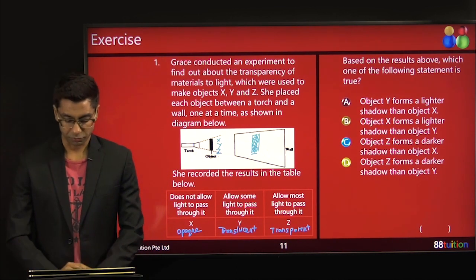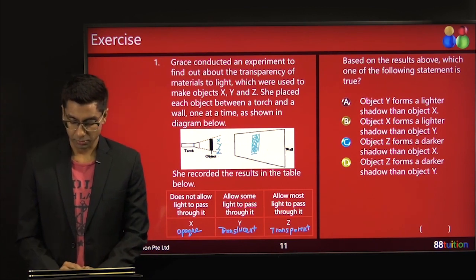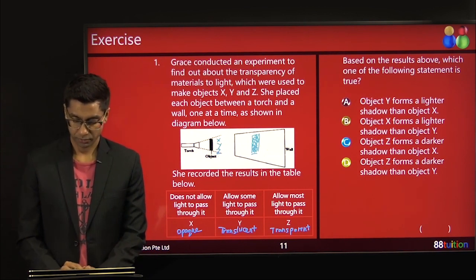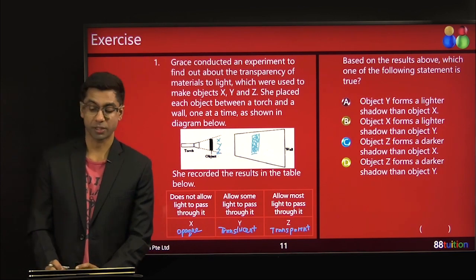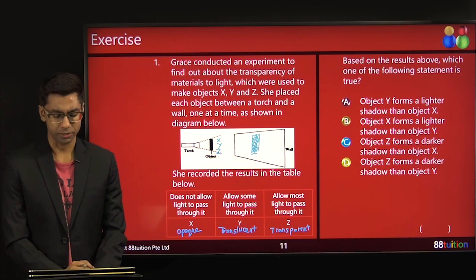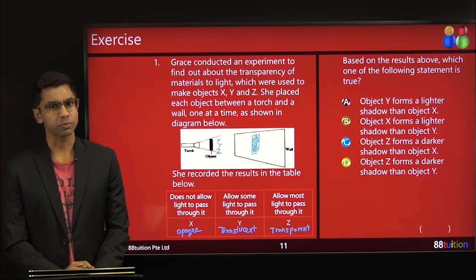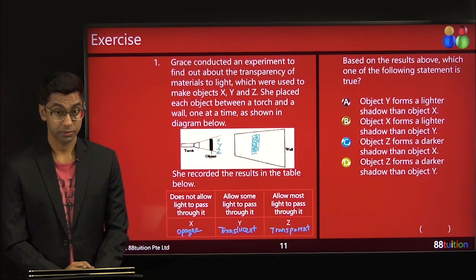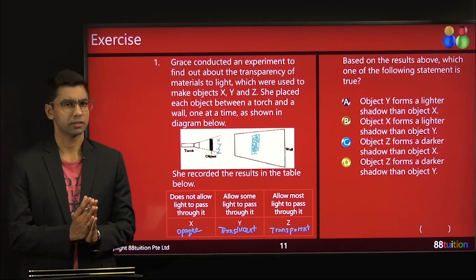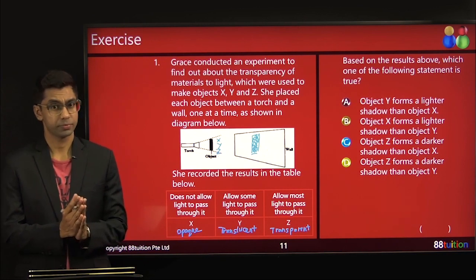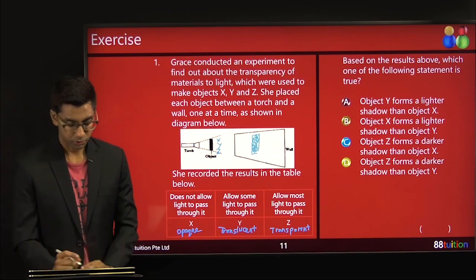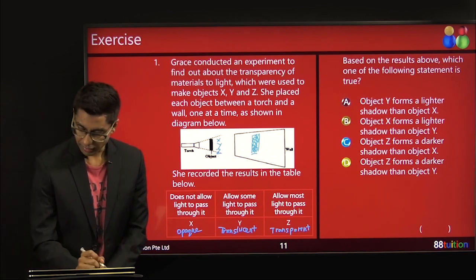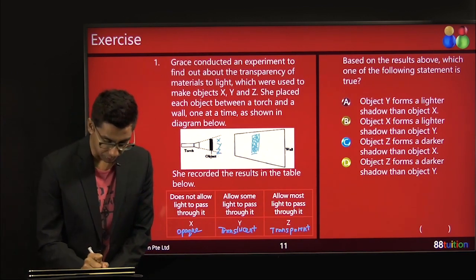So Z is transparent material. Y is translucent material. And X does not allow, so opaque material. There's no reflection here. So there are no mirrors here. Based on the results, which one of the following statement is true? Well, let's read one by one, right? That's the way we do it. Object Y forms a lighter shadow than object X. Well, which one will form the strongest shadow? The one that blocks most of the light, right? Like wood. It completely blocks the light. So the shadow will be a strong dark one. So let's put here lighter and darker. So this one will be darker, right?